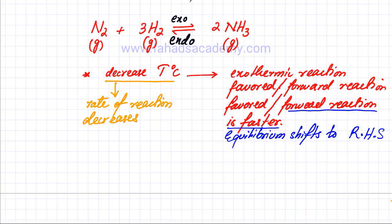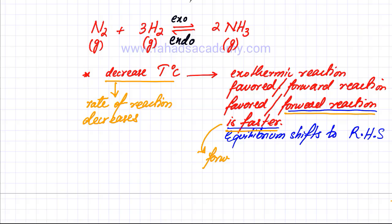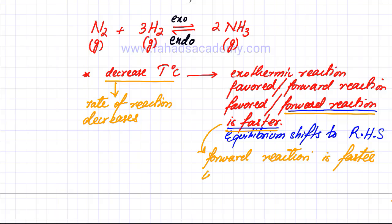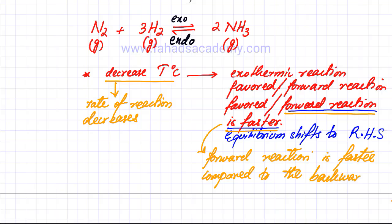I'm going to highlight this confusion further. When we talk about equilibrium and say the forward reaction is faster, we don't mean it's actually faster in absolute terms. What it means is that the forward reaction is faster compared to the backward reaction. It doesn't mean that the reaction is actually faster overall.